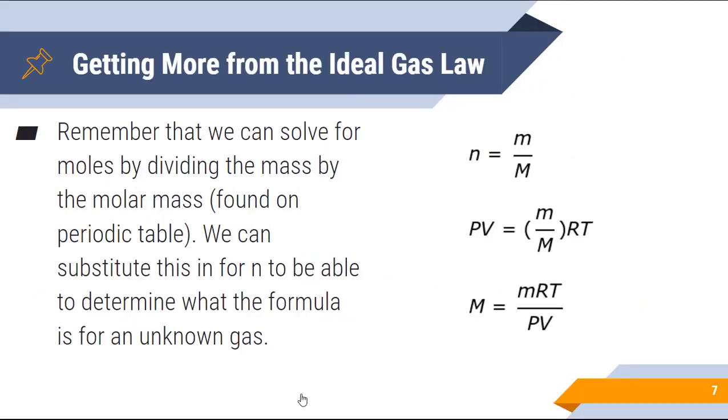So I'm sure you guys are really familiar with the ideal gas law. I'm not too stressed about that. But there's a couple things that we can actually add into this to make this just a little bit more interesting. Remember that we can solve for moles by dividing the mass by the molar mass on the periodic table. We can then substitute this in for n to be able to determine what the formula is for an unknown gas. Pretty awesome, isn't it?